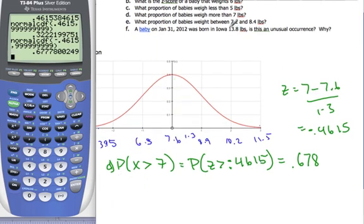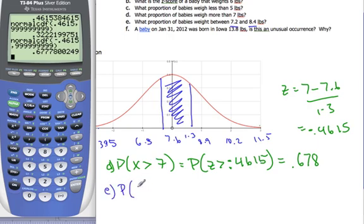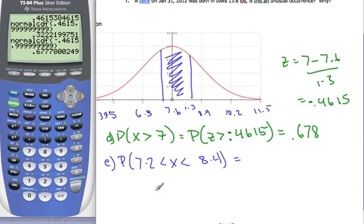I'm going to E part. We're looking for a proportion that's between 7.2 and 8.4. Looking at my sketch, that's roughly here to here. And I'm looking for this area in between here. And so, the probability is of 7.2 less than x less than 8.4. Now, in order to do that, I'm going to find my z-scores for both of these.